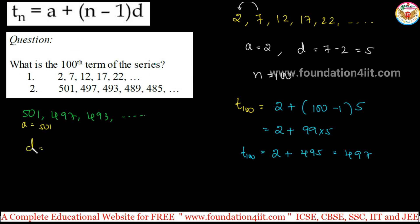Then common difference is, always remember, second term minus first term. The series is in arithmetic progression because difference is same. That is why it is arithmetic progression. Second one minus first one: 497 minus 501, so it is minus 4. Be careful when we are doing.